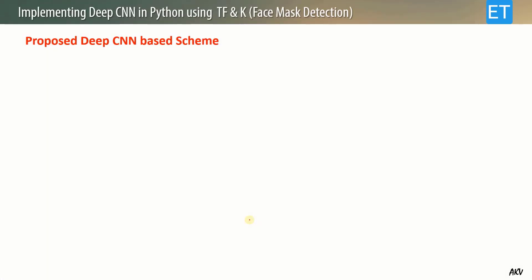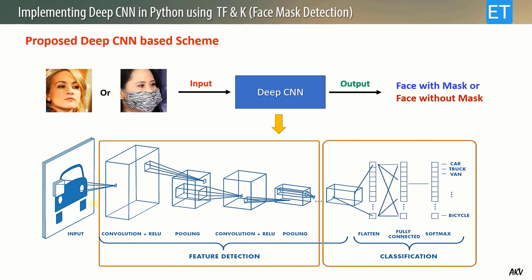Now let us see the structure of the CNN we are going to use. This is a generalized structure of a deep CNN. The input image is first convolved with various filters, then the result goes through Rectified Linear Units (ReLU) where negative values are omitted. Then it goes to max pooling, where the maximum value is taken from a 2×2 window. Further similar layer combinations follow — this is the feature detection part. The output classification part has fully connected layers for final classification.